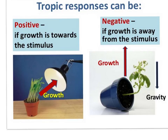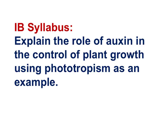Tropic responses can be positive if growth occurs toward the stimulus, as in phototropism. Or the response is negative if growth is away from the stimulus. In the case of geotropism, the stem of the plant bends away from the gravitational force. Roots display a positive response to gravity, growing toward the gravitational pull.